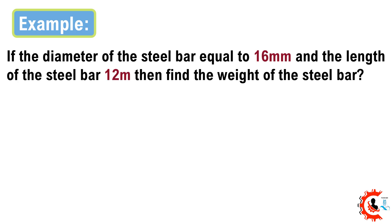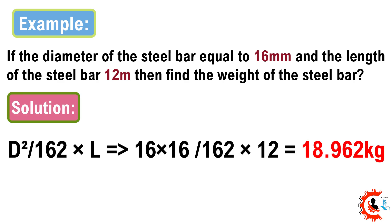Example: If the diameter of the steel bar is 16 mm and the length is 12 meters, find the weight of the steel bar. Weight = (d² / 162) × L = (16 × 16 / 162) × 12 = 18.962 kilograms.